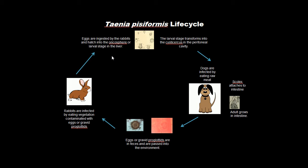The eggs are ingested by the rabbits, and they hatch into the oncosphere, or larval stage, in the liver of the rabbit. Then that larval stage transforms into a cysticercus in the peritoneal cavity. The dogs are infected by eating raw meat from the rabbit, and the scolex attaches to the intestine of the dog, where the adult grows.